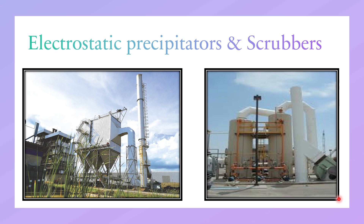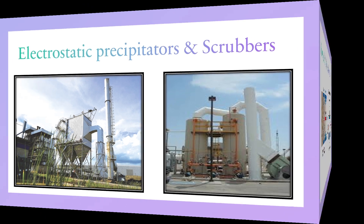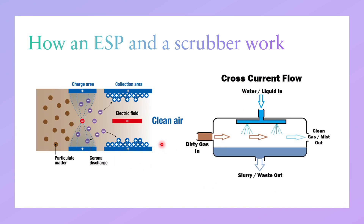We must know how electrostatic precipitators and scrubbers work. Here you can see how an electrostatic precipitator works. This is a device which removes fine particles of dust and smoke by using an electrically charged area. On the sides we have electrodes which are either positively or negatively charged, and depending upon the charge of the electrodes, the particulate matter gets attracted to the sides and the clean air is allowed to be released.